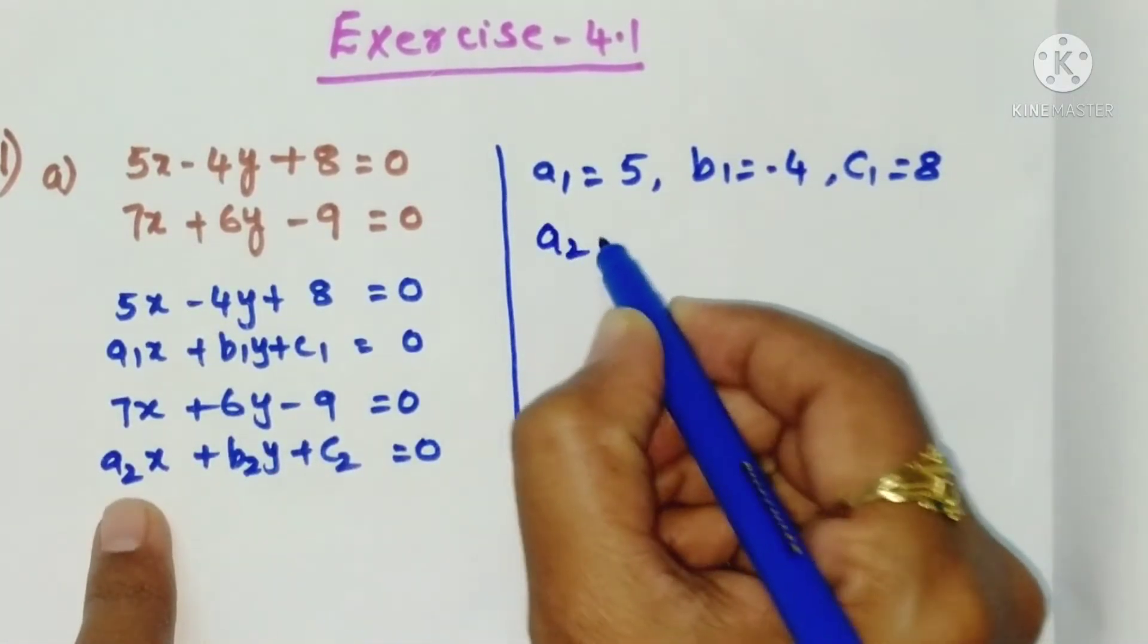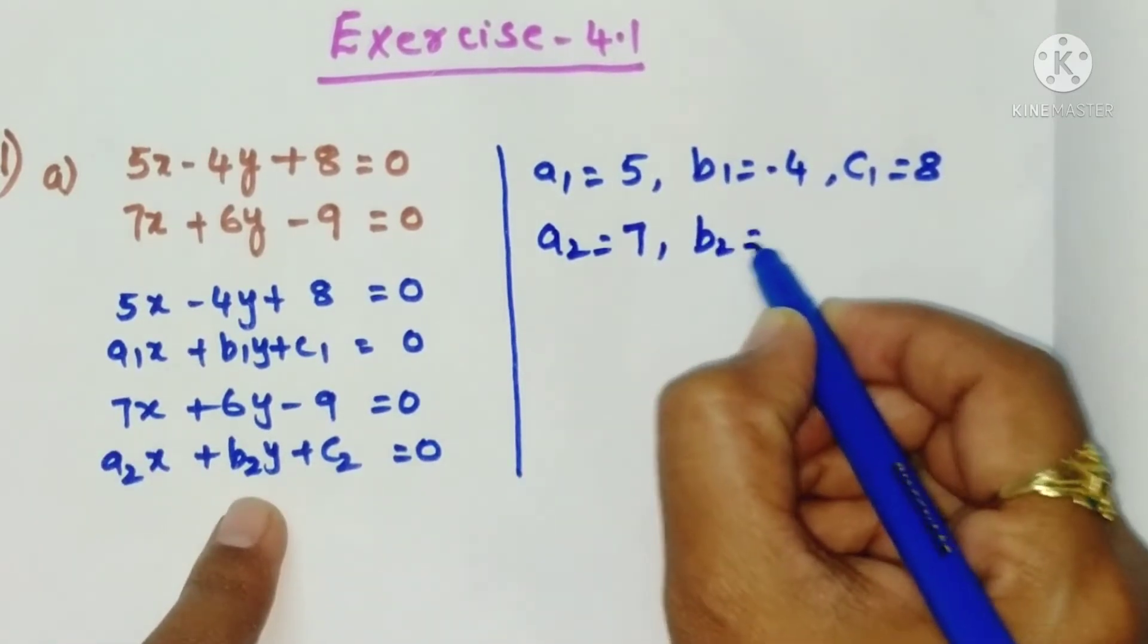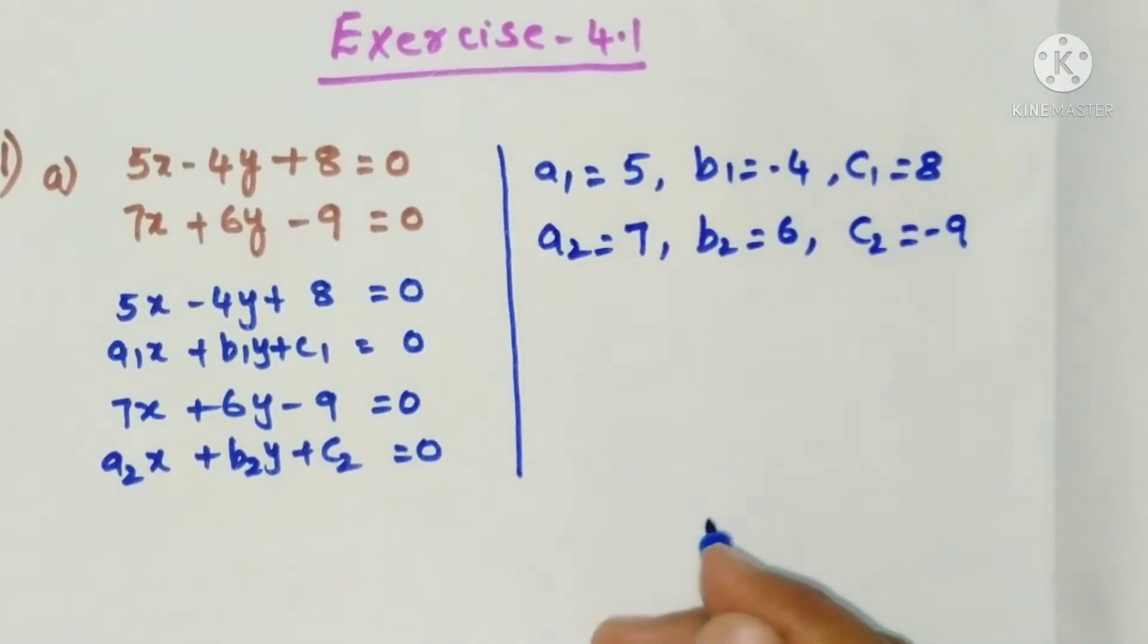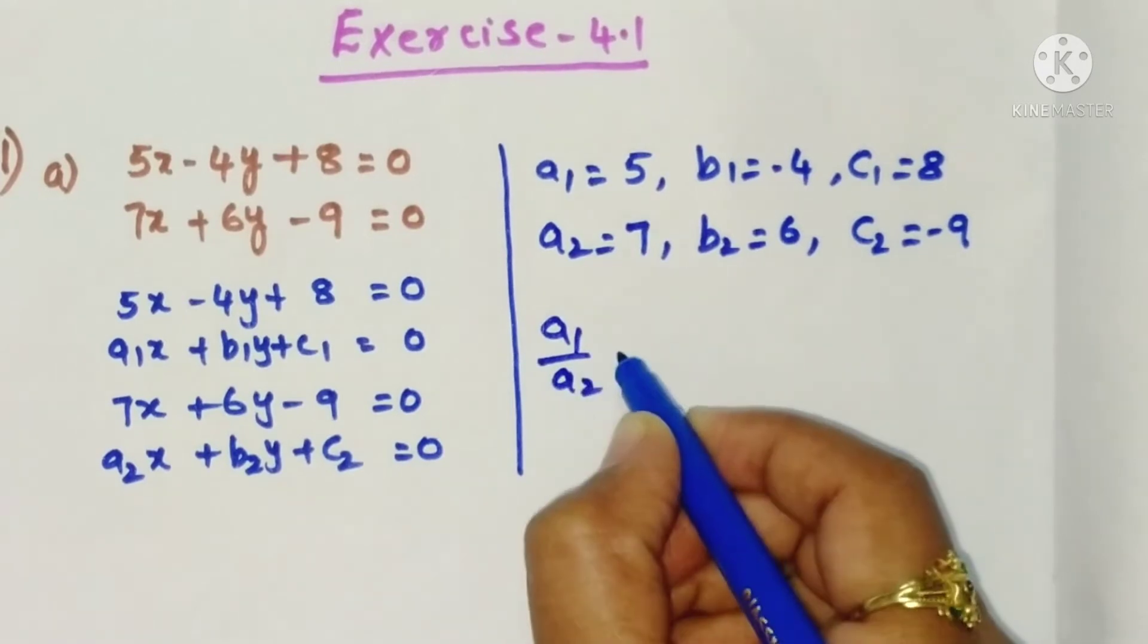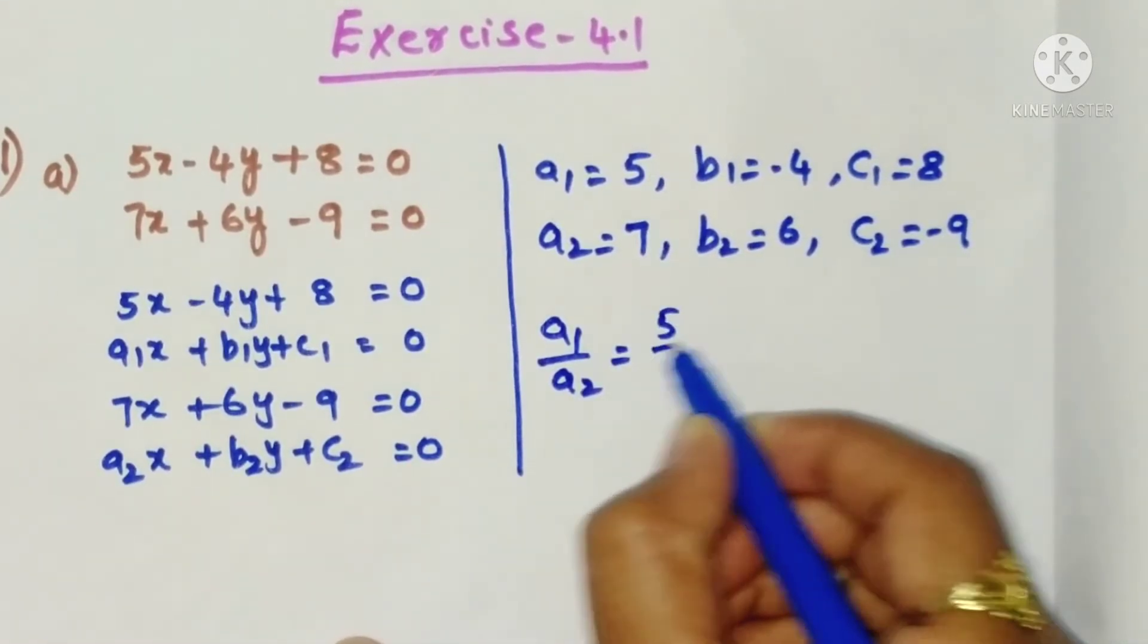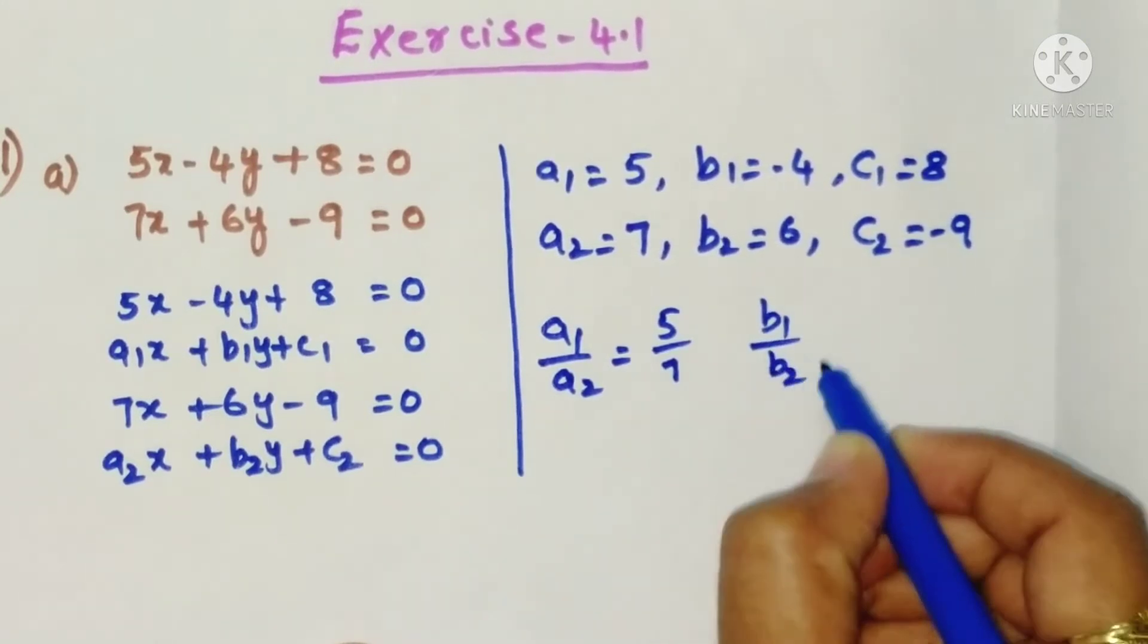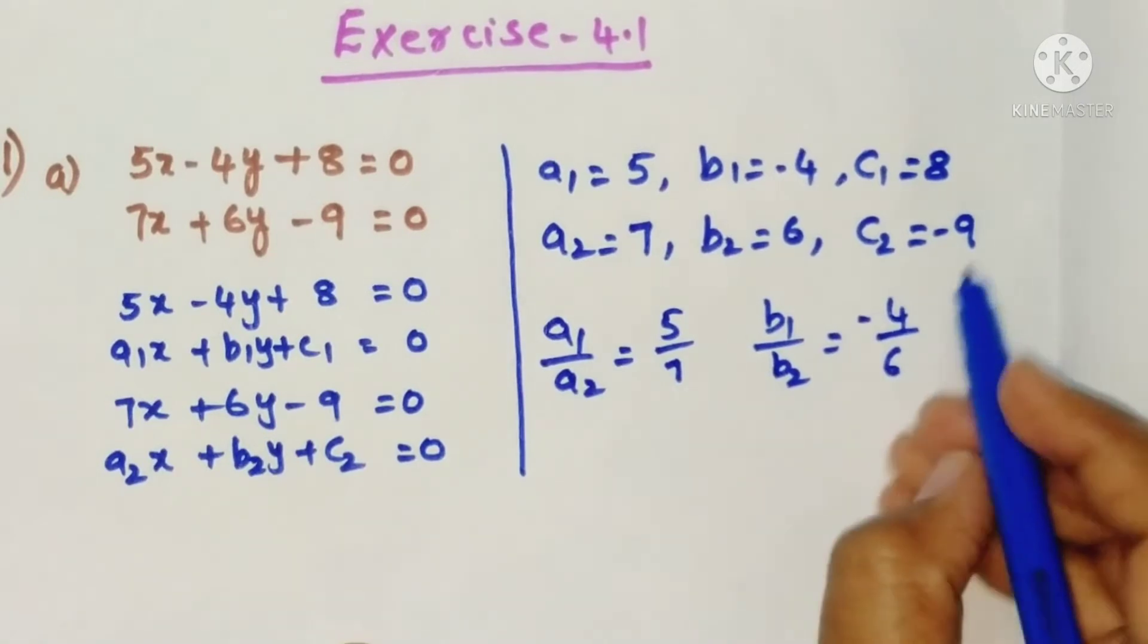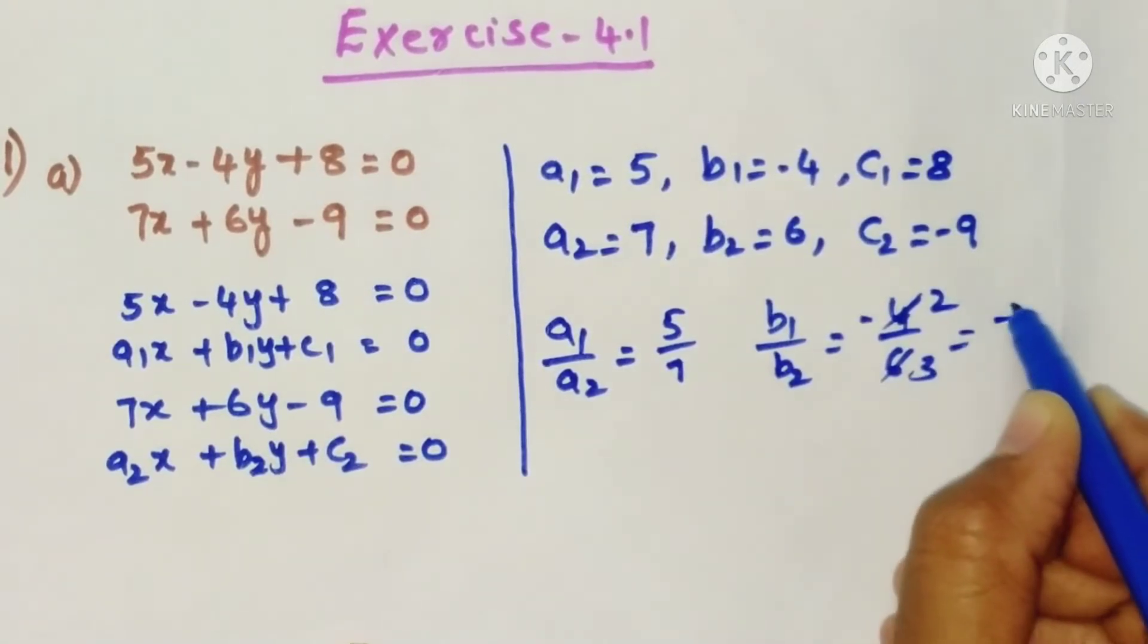Now a2 is 7, b2 is 6, c2 is minus 9. Now just calculate a1 by a2, so a1 is 5, a2 is 7. Similarly b1 by b2, minus 4 by 6.